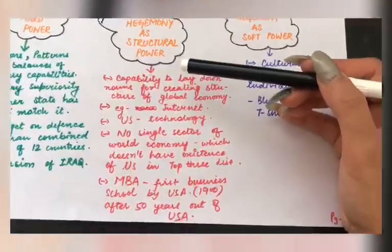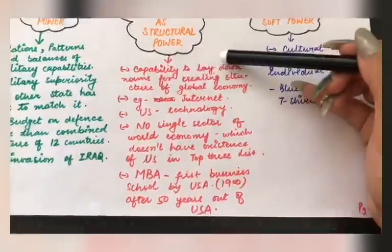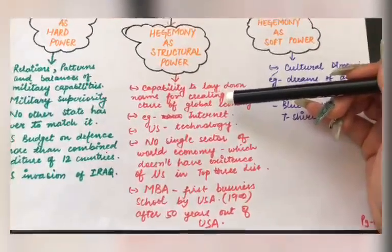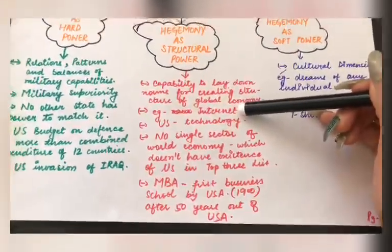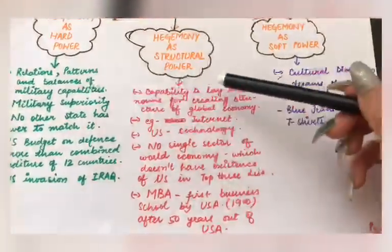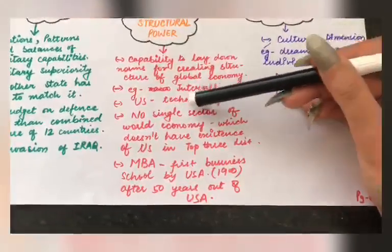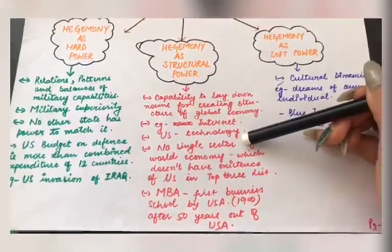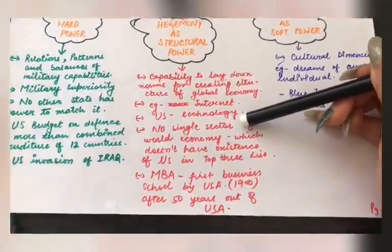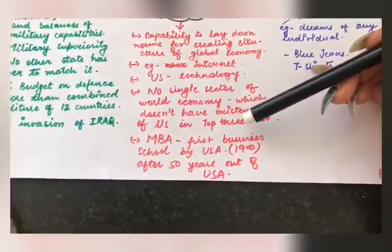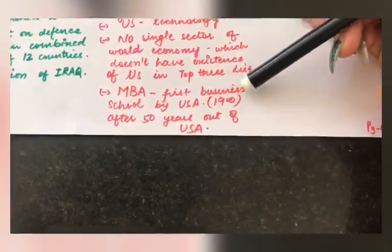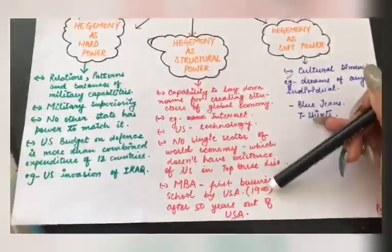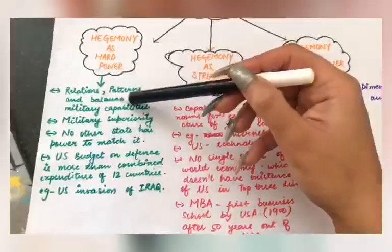The second form is US hegemony as structural power. Structure means the capability to lay down rules and norms for the global economy. The whole world economy — including technology like the internet — was shaped by the US. In the top sectors of the world economy, the US dominates every single sector. The most important example of structural power is the MBA — Master's in Business Administration. The first MBA course was launched by the US in 1900, and only after that did other countries adopt it.